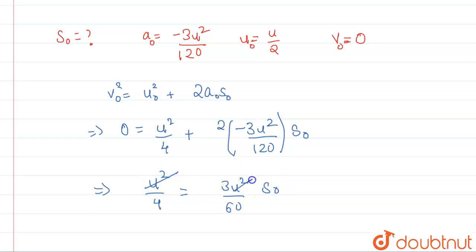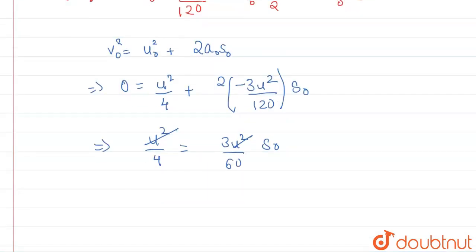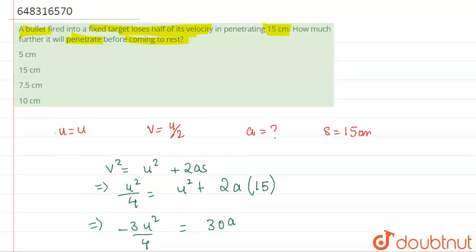u² and u² will get cancelled. And finally, what we'll have? s₀ will be equal to 60 divided by 3 into 4. So 3 into 4 is 12 and this will become 5 centimeters. So our answer will be clearly option a, that is 5 centimeters.